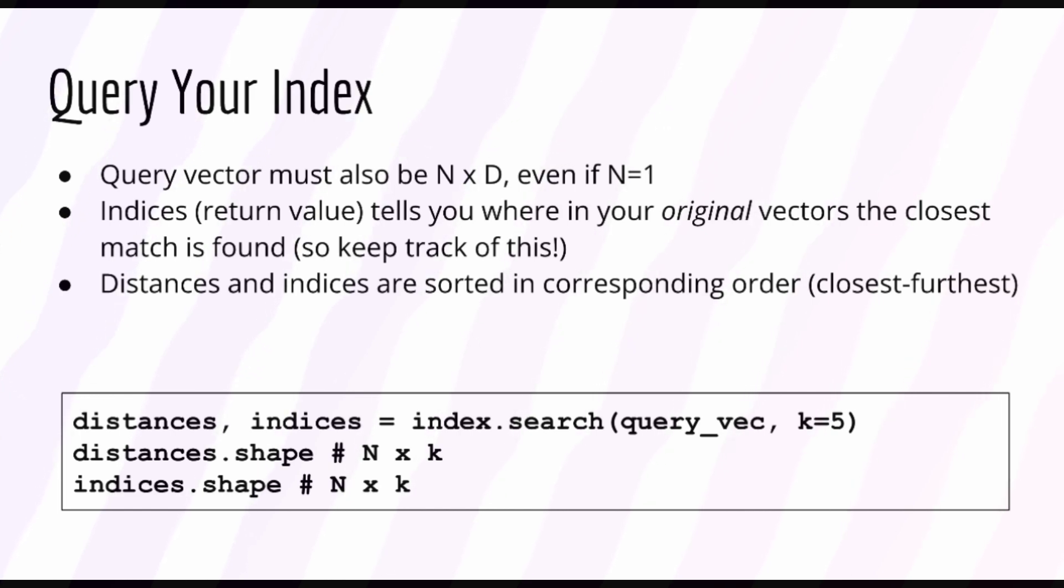It's important to understand the return values for this function. In particular, it returns a 2D array of distances and a 2D array of corresponding indices. The distances are just the actual distances between the query vector and the retrieved vectors returned by the search. The indices tell you where in your original dataset of vectors these matches can be found, of course in corresponding order. So the first element will contain the closest item, the second element will contain the second closest item, and so forth. As such, you'll need to always have information about your original vectors on hand to look up the actual data you are looking for before it was converted into a vector.